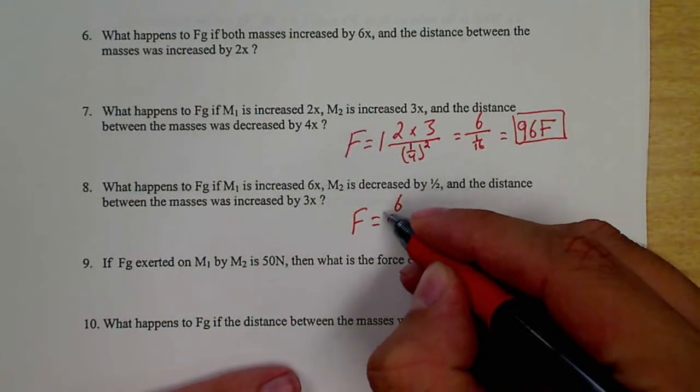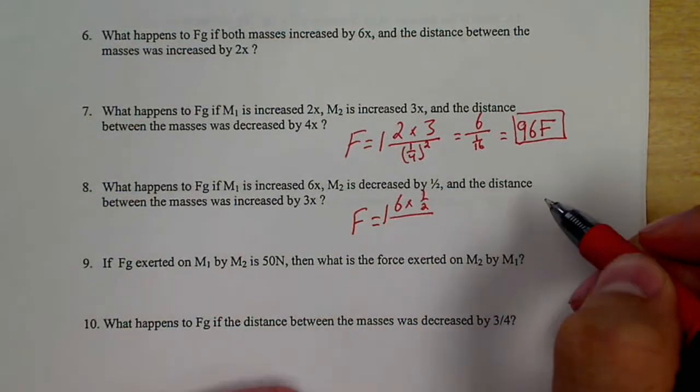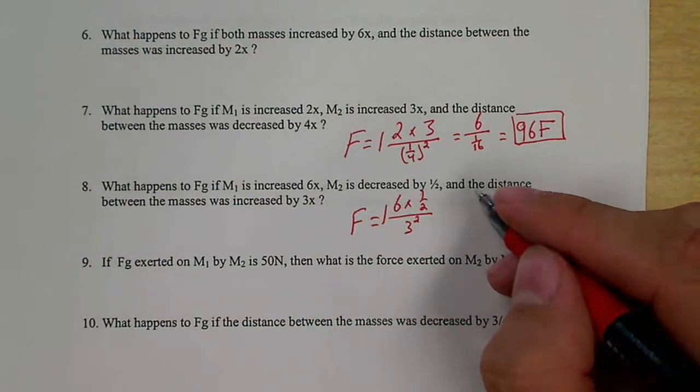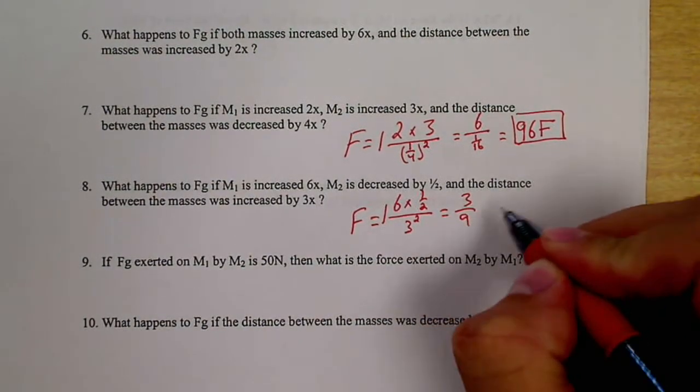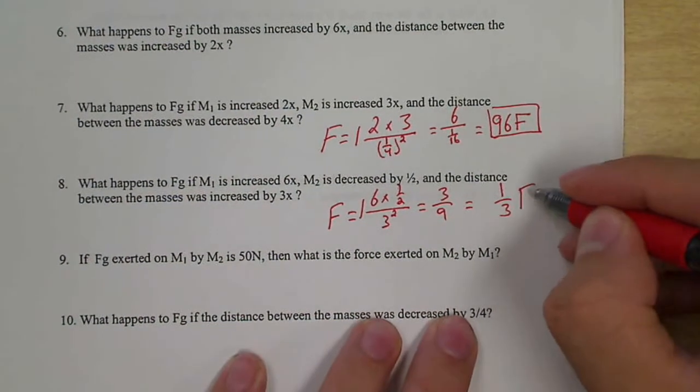M1 is increased by six, M2 decreased to half, the distance by three. So six times a half, that's three, three squared is nine. I'll reduce that to one-third the force.